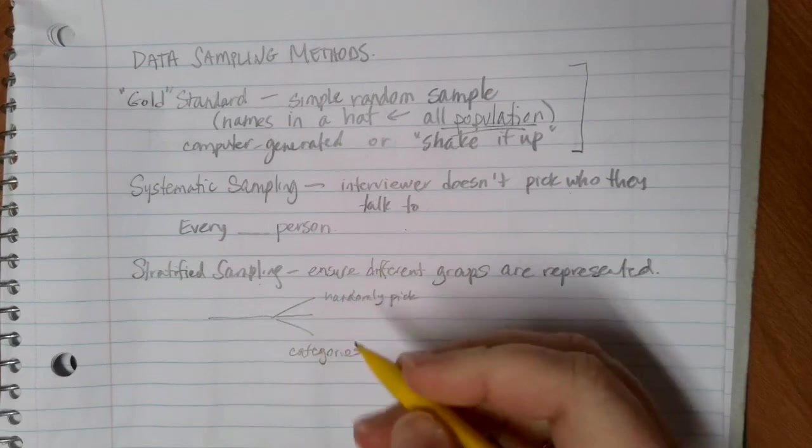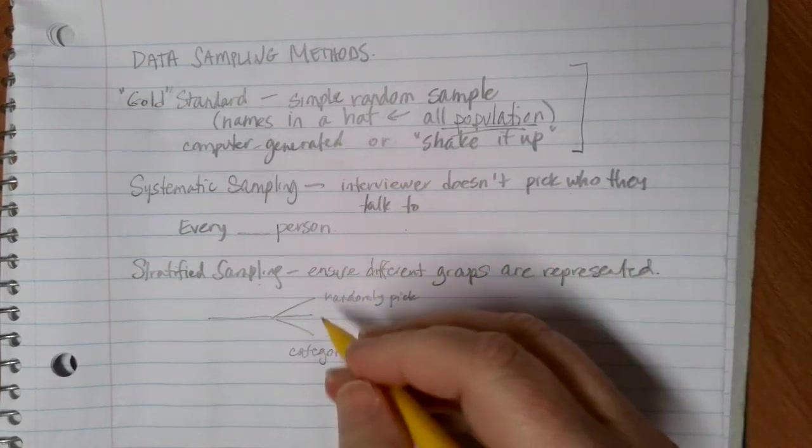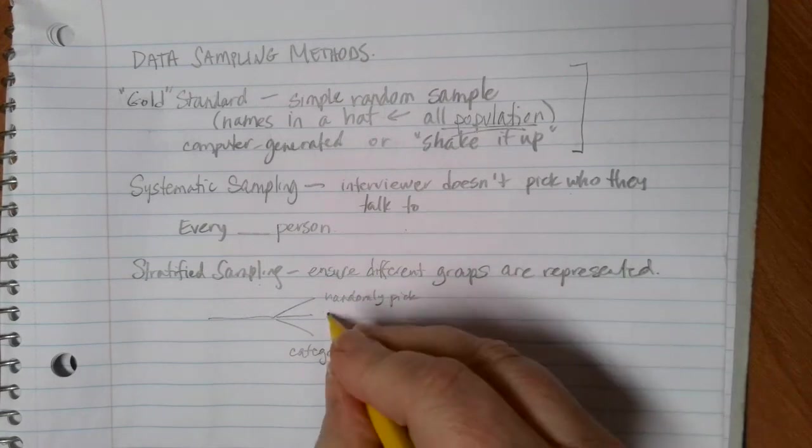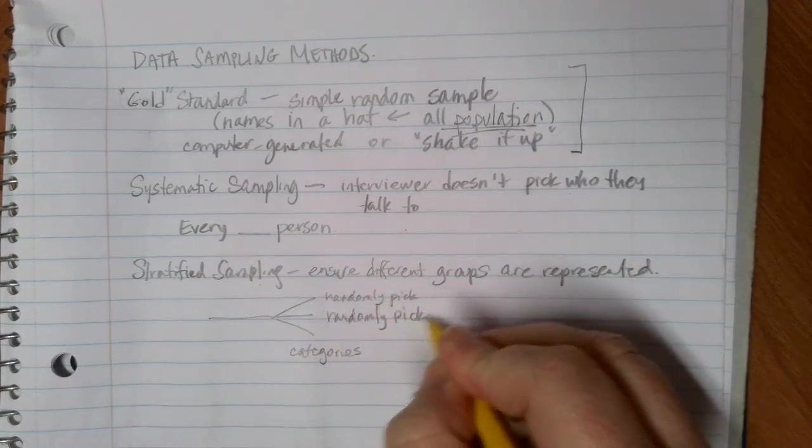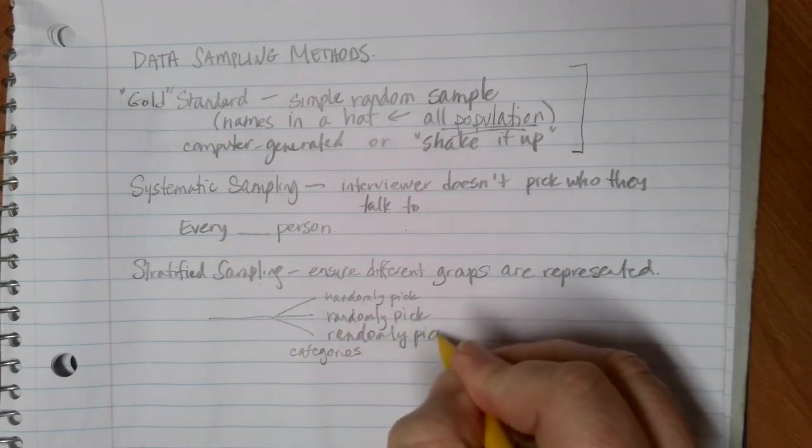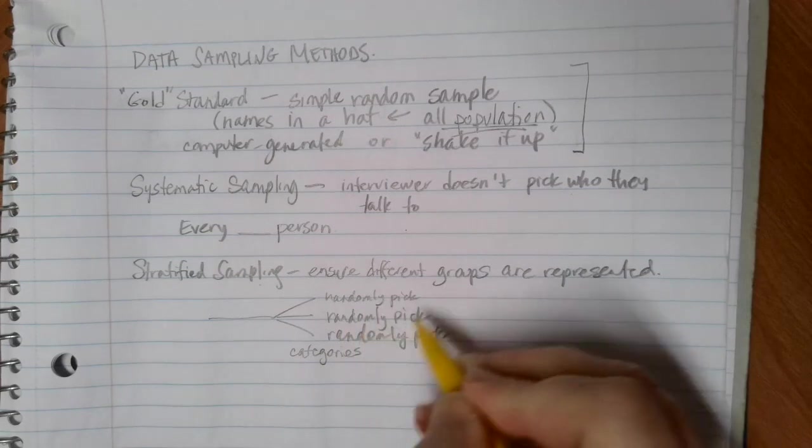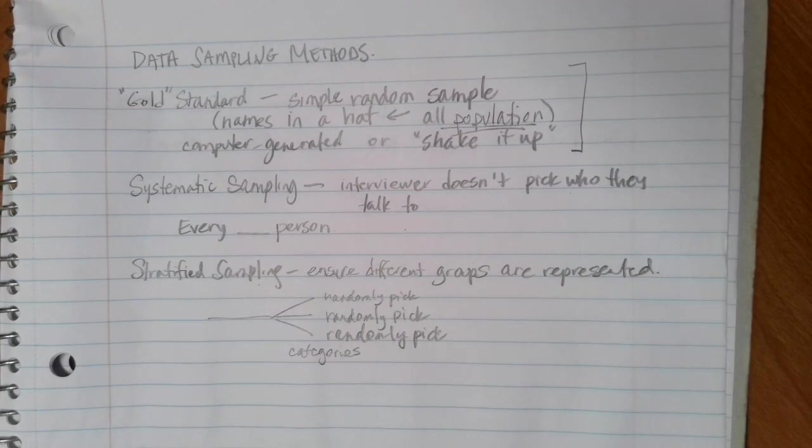Ideally, your groups would represent percentages of the population. So we have that random sample piece, but we're making sure and verifying that we have specific demographics represented.